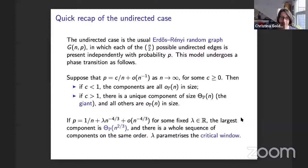Suppose we take the probability that a particular edge is present to be C/n plus something little-o of n to the minus one, as n goes to infinity, for some fixed constant C greater than or equal to zero. If that constant is less than one, the components are all microscopic in size. And if the constant is bigger than one, there's a unique giant component occupying a positive proportion of vertices, and all others are microscopic in size.